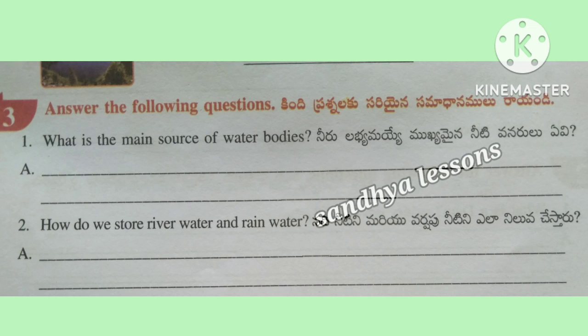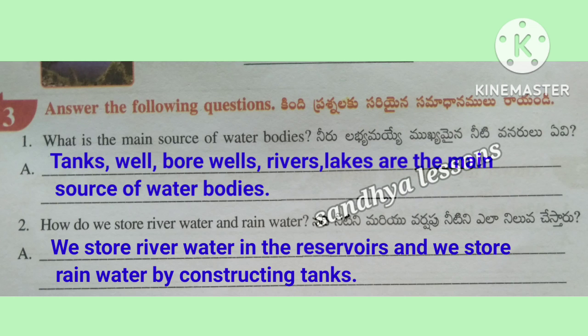Third, answer the following questions. First question: What is the main source of water bodies? Tanks, Well, Bore Wells, Rivers, and Lakes are the main source of water bodies. Second question: How do we store river water and rain water? We store river water in the reservoirs and we store rain water by constructing tanks.